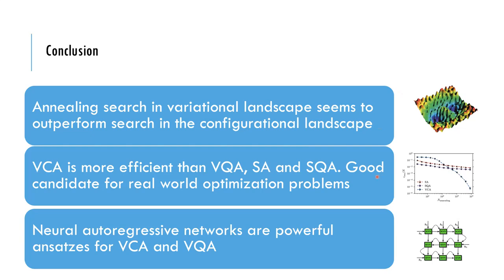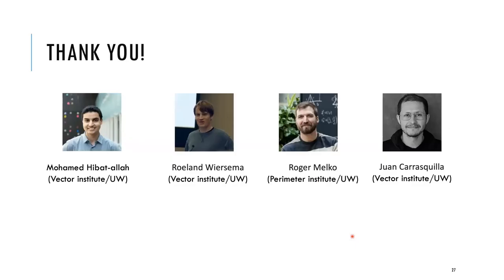In conclusion, we found two different search paradigms: a search in configuration space and a search in variational space, and the latter is better. Variational classical annealing is better than simulated annealing, variational quantum annealing, and simulated quantum annealing, making it a strong candidate for real-world optimization problems. Neural autoregressive networks are very powerful tools to drive the variational formulation of both classical and quantum annealing. I'd like to thank my collaborators, especially Muhammad, who was the main driver behind the project and did most of the simulations.